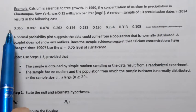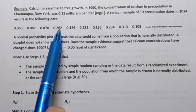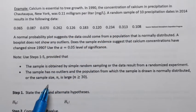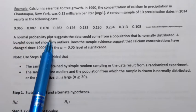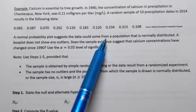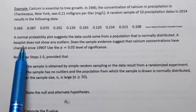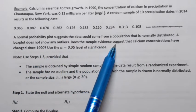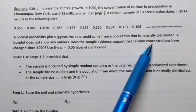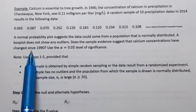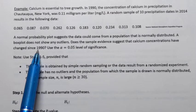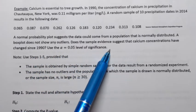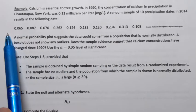This represents precipitation for each of those randomly selected 10 days. A normal probability plot suggests the data could come from a population that is normally distributed. A box plot does not show any outliers. Does the sample evidence suggest that the calcium concentrations have changed since 1990? Use the alpha equals 0.05 level of significance.